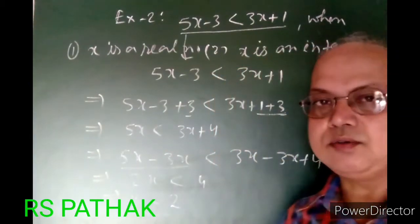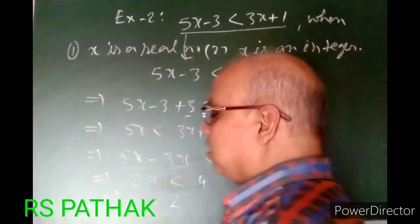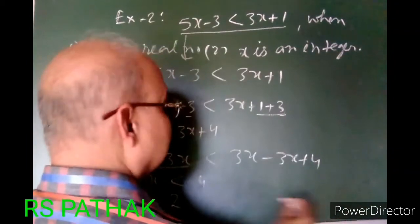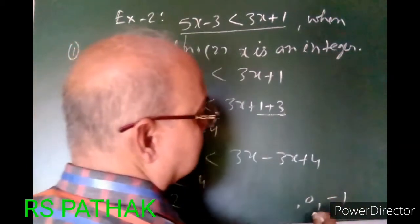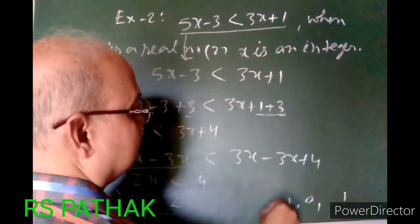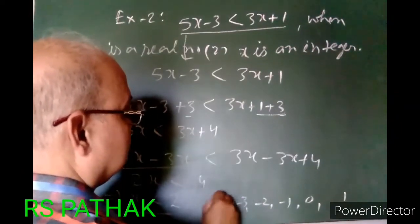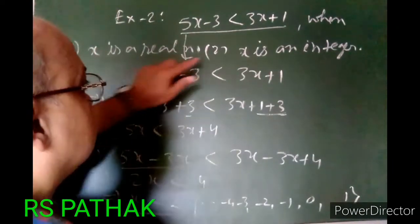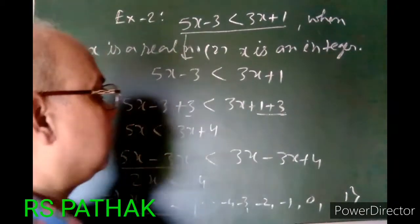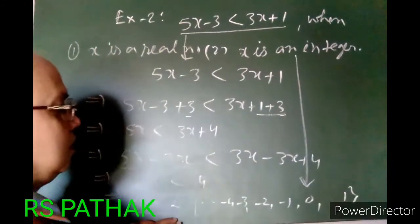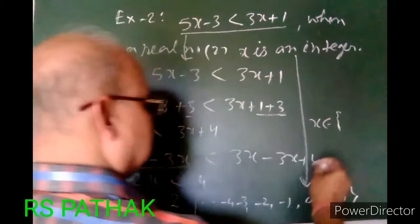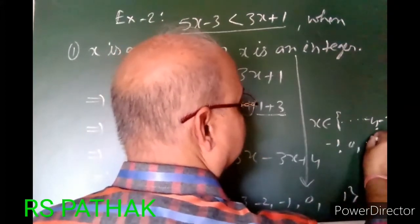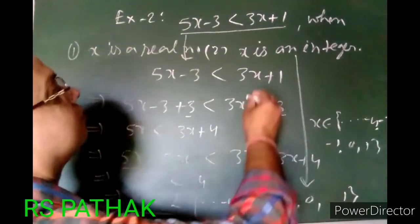x is less than 2, meaning x does not include 2. When x is an integer, the solution set is x ∈ {…, −4, −3, −2, −1, 0, 1}. When x is a real number, x can be any value less than 2, including non-integers like 1.5, 0, −1, −2, and so on.